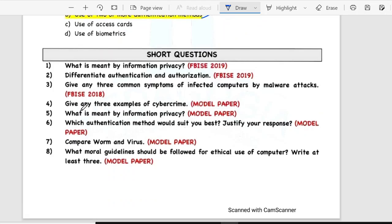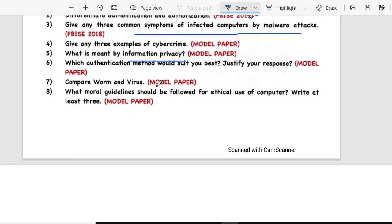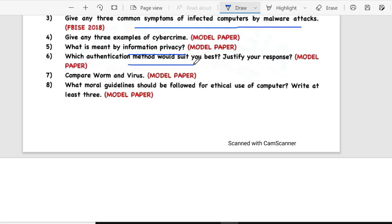Short questions: what is meant by information privacy? Second is differentiate authentication and authorization. Third is give any three common symptoms of infected computer by malware attacks. Fourth is what is meant by information privacy? Fifth is which authentication method would you suit best and justify your response.